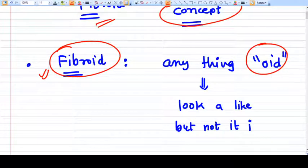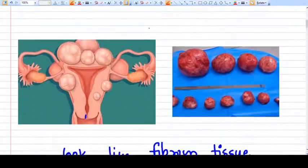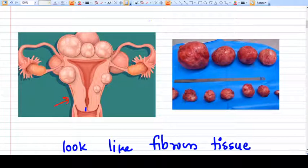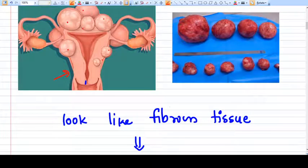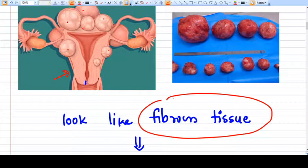So fibroid, if you see, this is the uterus and these are various kinds of fibroids. If you see the real fibroids here that are removed by myomectomy, they look like fibrous tissue - that's why it's called fibroid.